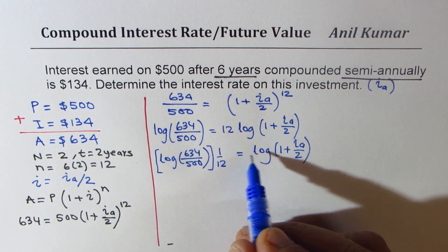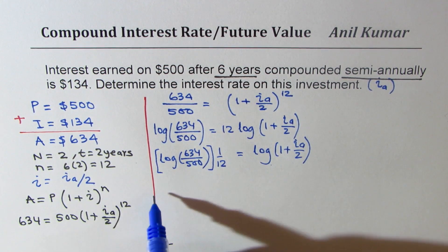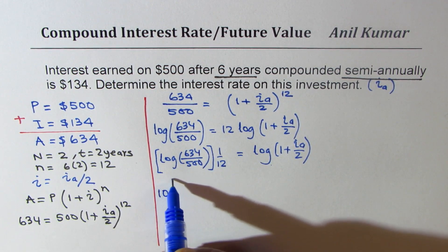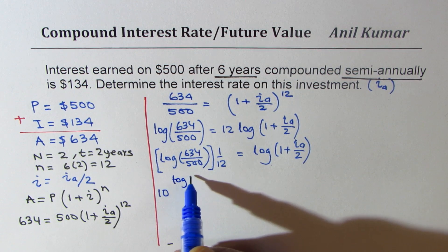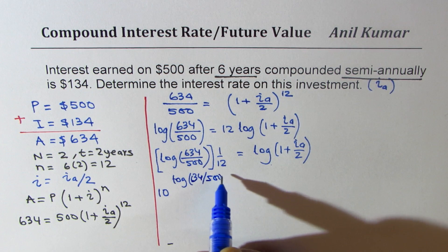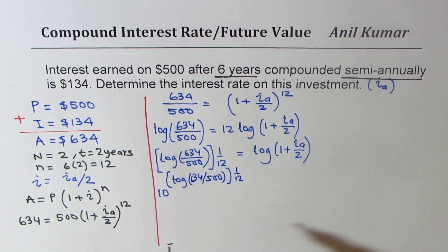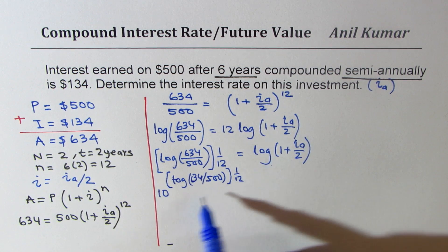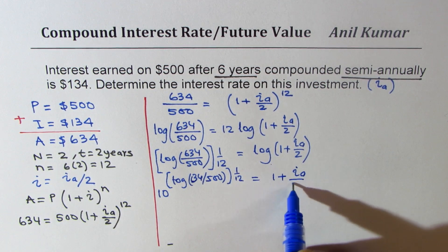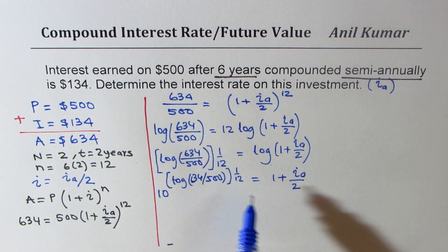So you could write it in exponential form as: 10 to the power of [log of (634 over 500) divided by 12] equals 1 plus interest per annum divided by 2. Now you have to take away 1 from here and multiply by 2 to get the interest per annum.